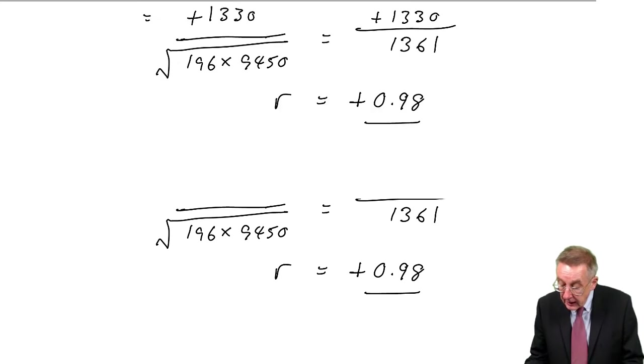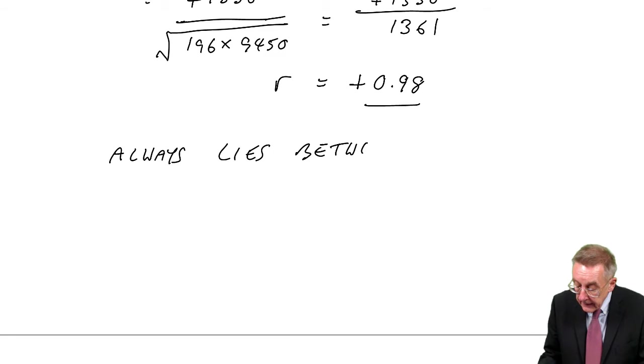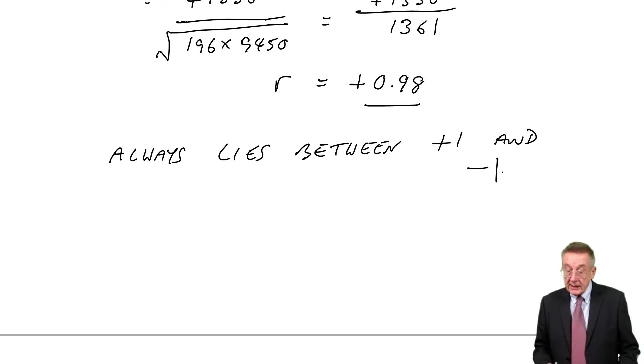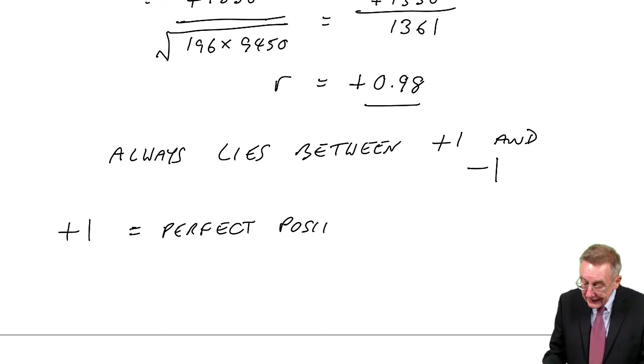Well, the significance of r, it will always lie between plus 1 and minus 1. Always. If it's plus 1, we say we have perfect positive linear correlation.